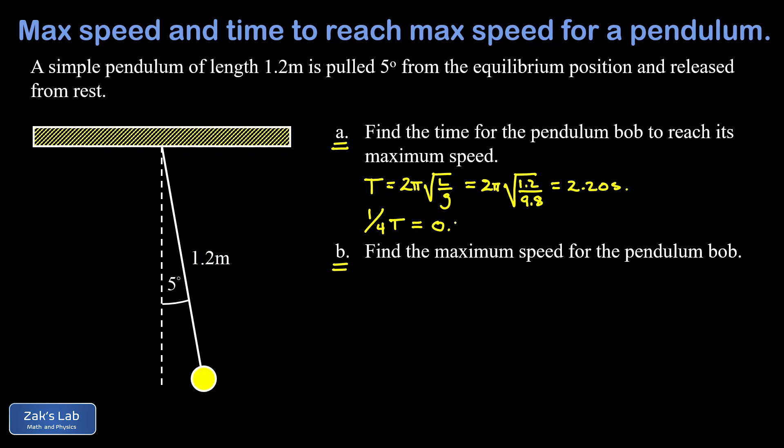So next we get into this energy conservation problem. We want to find the maximum speed for the pendulum bob and that's going to happen at the lowest point on its path which is at that equilibrium location. So we'll start by saying E initial is equal to E final.